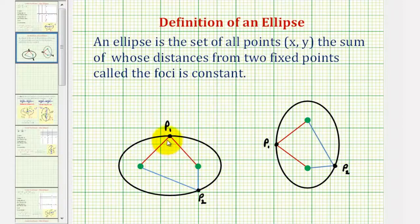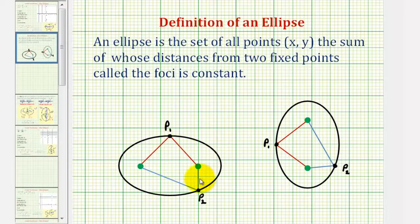For example, if we found the length of these two red segments, the sum of the lengths would be the same as the sum of the lengths of the two blue segments. And this would be true for any point on the ellipse.